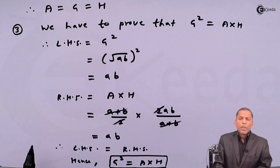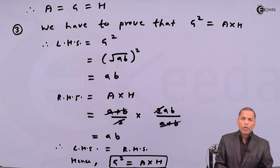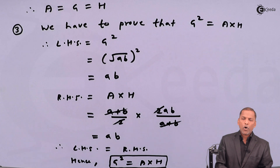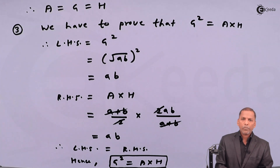So in this way we prove all three parts which occur in the theorem. This is the required proof for the given theorem. Thank you.